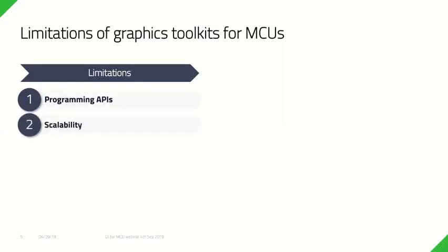We also noticed that a lot of these toolkits have fixed layout mechanisms, which means that if you are targeting a family of devices with different screen sizes or aspect ratios — for example a 2-inch, 3-inch, or 4-inch device, or aspect ratios of QVGA, WQVGA, and so on — then for every screen size and aspect ratio you might have to create a complete user interface.